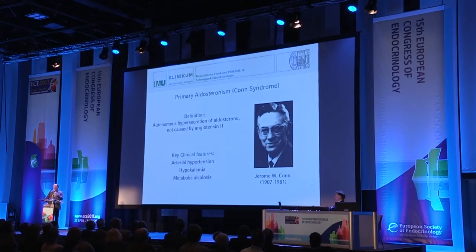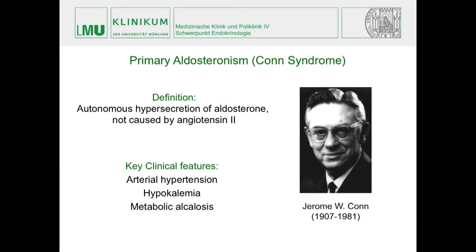I'll give just one slide to define primary aldosteronism, or Conn's syndrome, defined as autonomous hypersecretion of aldosterone which is not caused by angiotensin II. The key clinical features you all know are arterial hypertension, hypokalemia, and metabolic alkalosis. This whole feature was first described and put together with hyperaldosteronism by Jerome Conn.